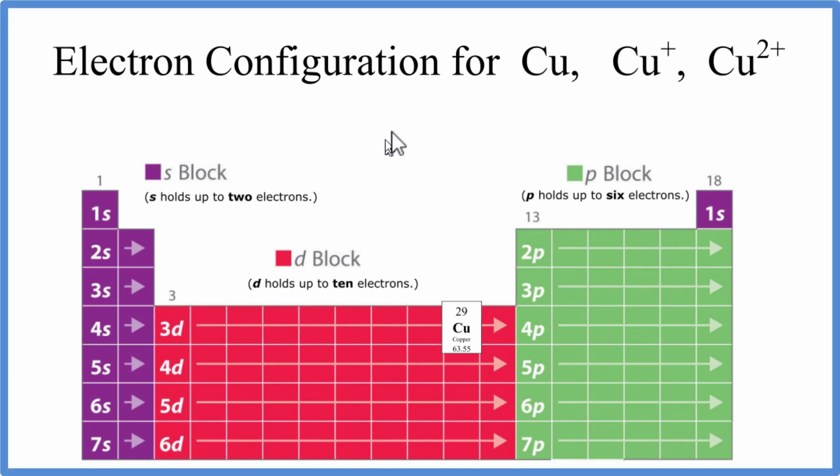In this video, we'll write the electron configuration for copper and then also the Cu+ and Cu2+ ions. Copper is an important one to understand since it's an exception to the rules that we use to write electron configurations. So you'll see it quite often.